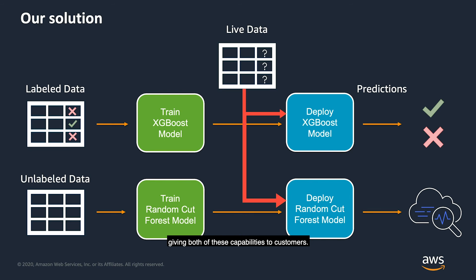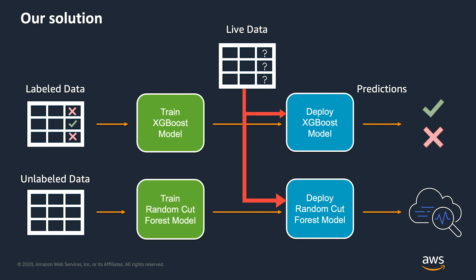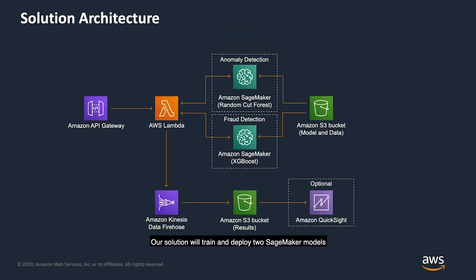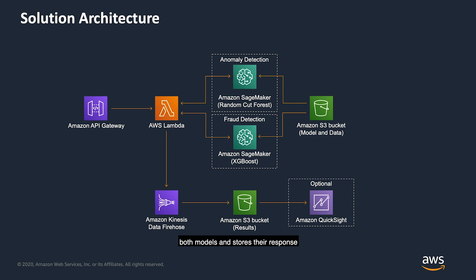Our solution is aimed at giving both of these capabilities to customers. We use SageMaker to train both an unsupervised model and a supervised one, which are then deployed using SageMaker managed endpoints. When new data arrives, we can use both of these models to get estimates of their anomaly score, as well as predicted labels from the supervised model. These models will be invoked using an API gateway with a Lambda function that invokes both models and stores their response to S3 for further analysis. We can finally use QuickSight to analyze the output of our models.